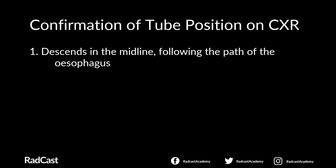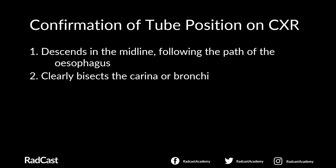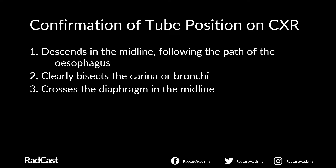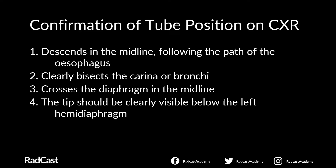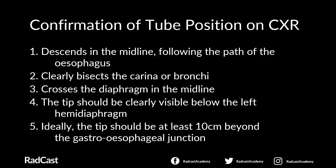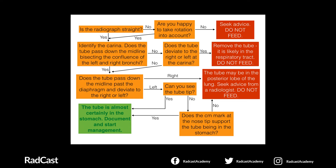There are five steps to confirm NG tube position on a chest x-ray. First, confirm the correct patient, date, and time, and check the x-ray viewing field includes the upper oesophagus and extends beyond the diaphragm. Step one: does the NG tube descend in the midline following the path of the oesophagus? Step two: does it clearly bisect the carina or bronchi? Step three: does it cross the diaphragm in the midline? Step four: is the tip visible below the left hemidiaphragm? Step five: is the tip at least 10 cm beyond the gastro-oesophageal junction? A flowchart summarises these steps.